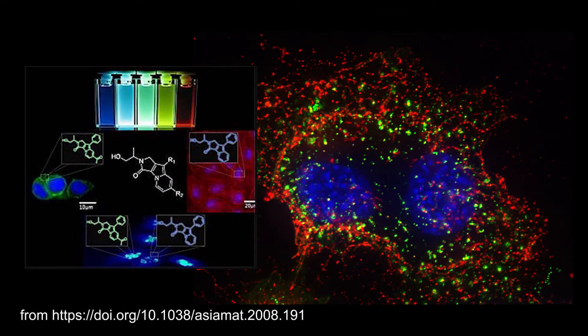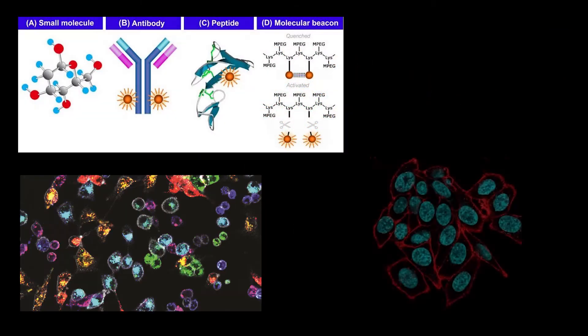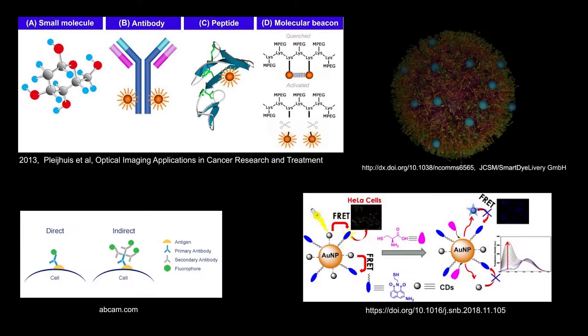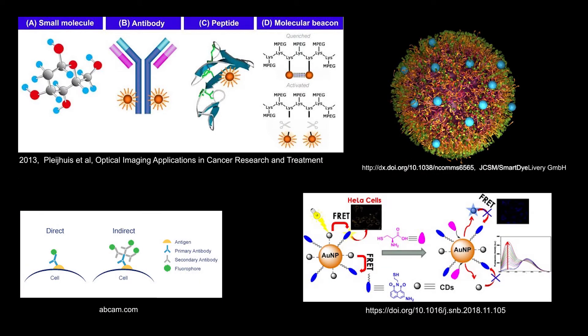Fluorescence microscopy is used for viewing samples that have fluorescent probes, whether it be fluorescent stains, fluorescent proteins, fluorescently labeled antibodies, fluorescent metals, or nanoparticles.